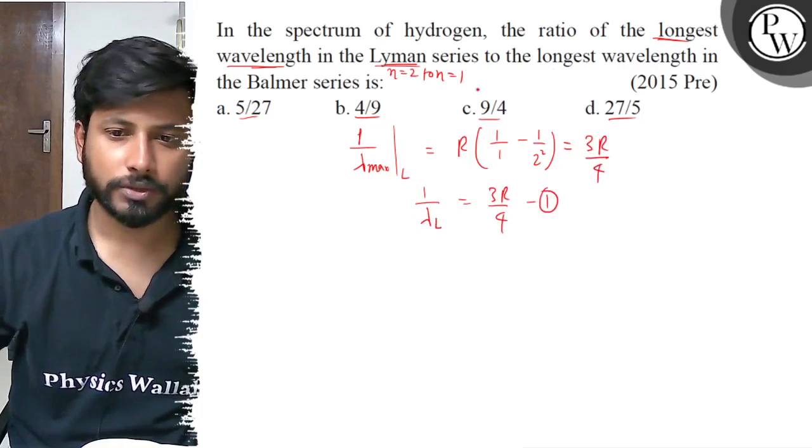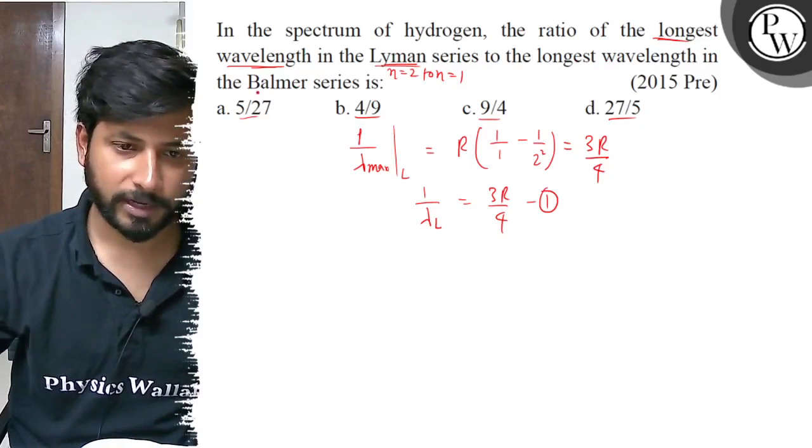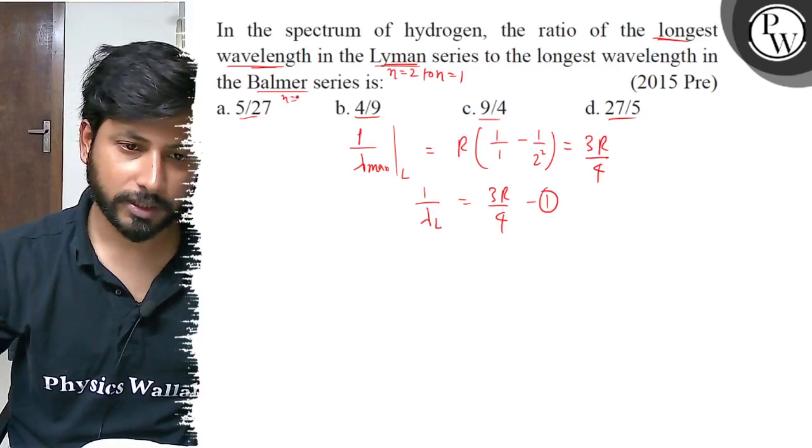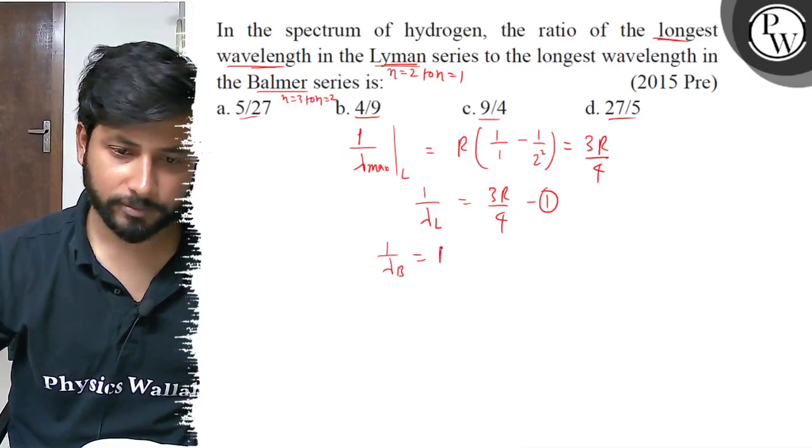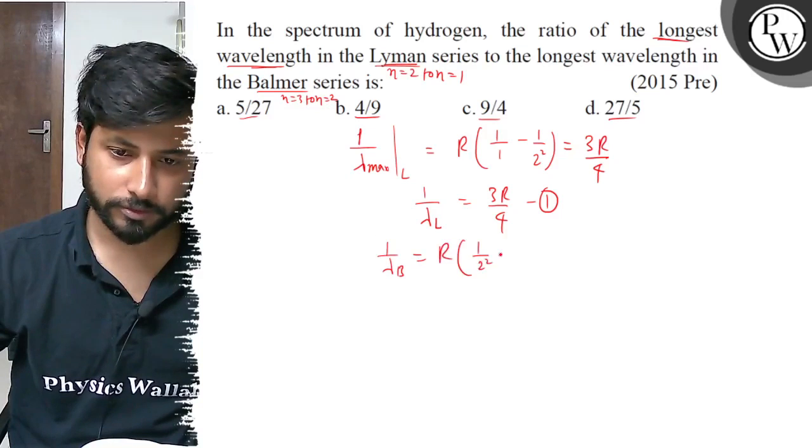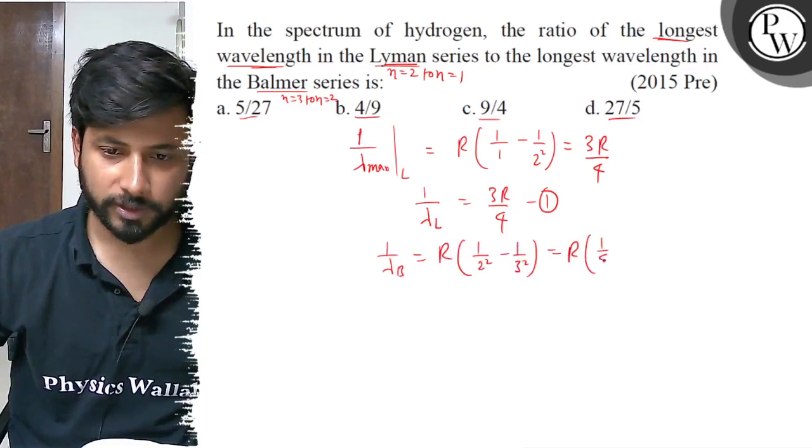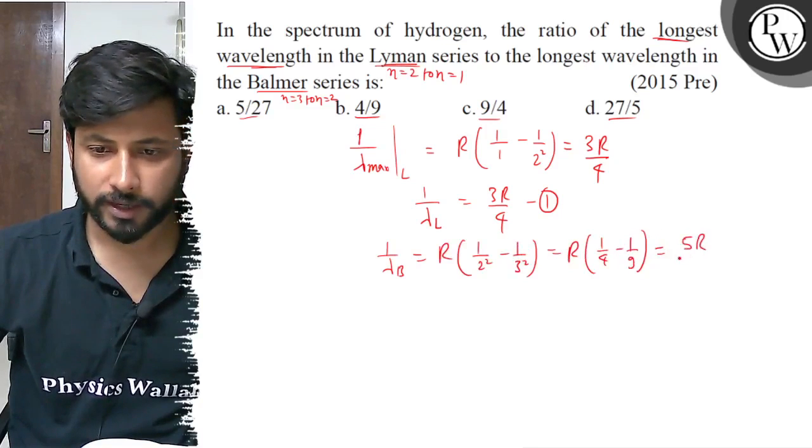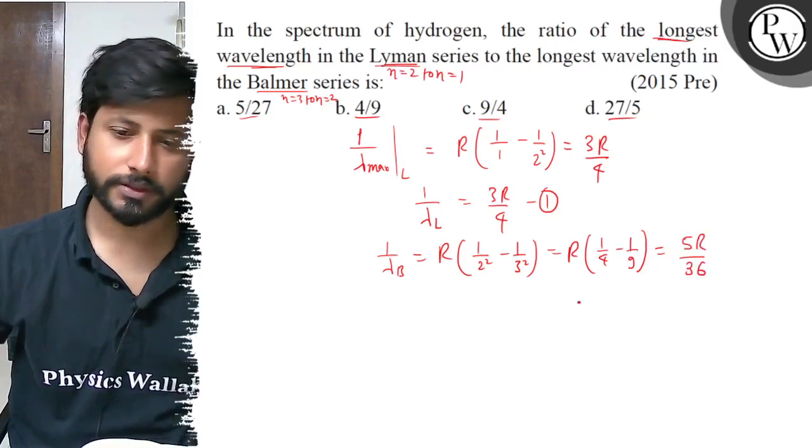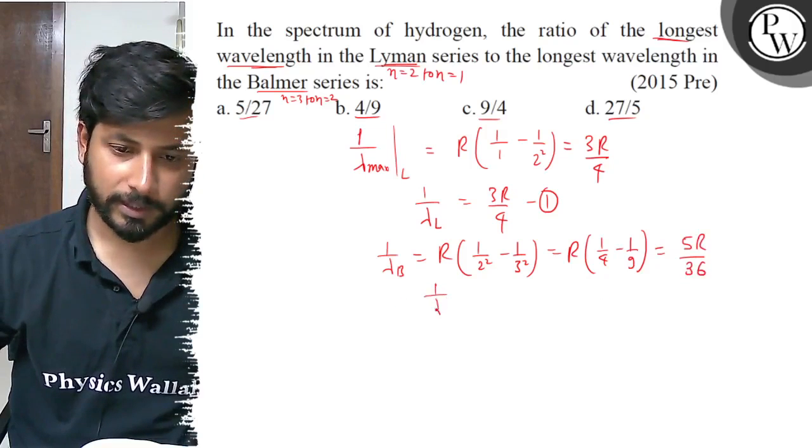Here in case of Balmer, this is the longest wavelength. In Balmer, the longest wavelength is N equals to 3. Then 1 by lambda B equals to R, 1 by 2 square minus 1 by 3 square. This is R, 1 by 4 minus 1 by 9. Here is 5R by 36. So 1 by lambda B equals to 5R by 36.